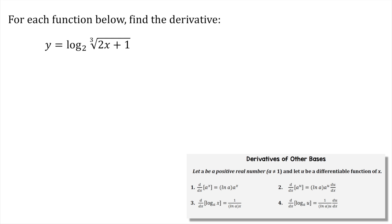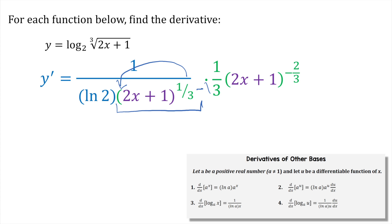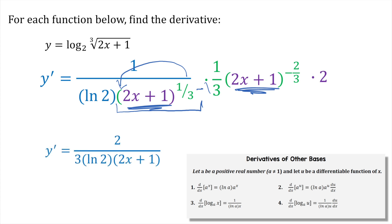Log base 2 of the cube root of 2x plus 1. We know the base is 2, so we do 1 over ln of 2, repeat the function with a fractional exponent. Then we take the derivative using the chain rule: the 1 third comes forward, drop the exponent by 1, and then the derivative of the inside function is 2. Cleaning it up, y prime equals 2 over 3 times ln of 2 times 2x plus 1.